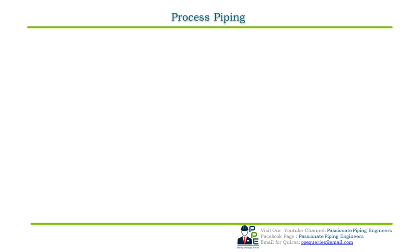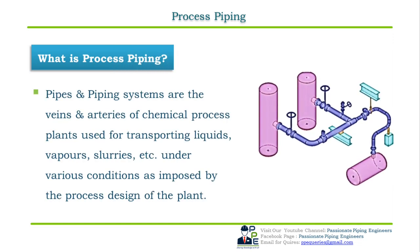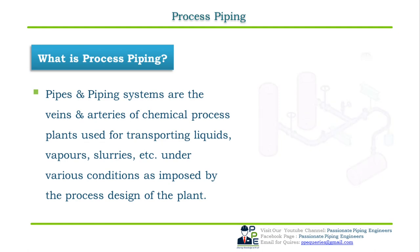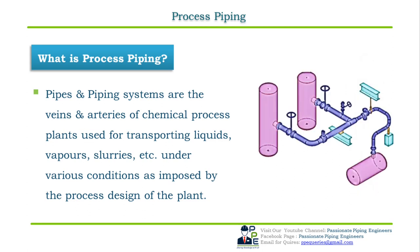The third topic is: what is process piping? Pipes and piping systems are the veins and arteries of the chemical process plant, used for transporting liquids, vapors, slurries, etc., under various conditions imposed by the process design of the plant. Just as blood flows through the veins and arteries to various parts of the body, similarly in refineries and chemical process plants, liquids and gases are transported from one point to another through pipes.